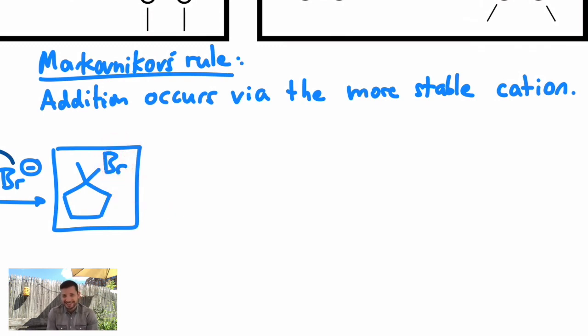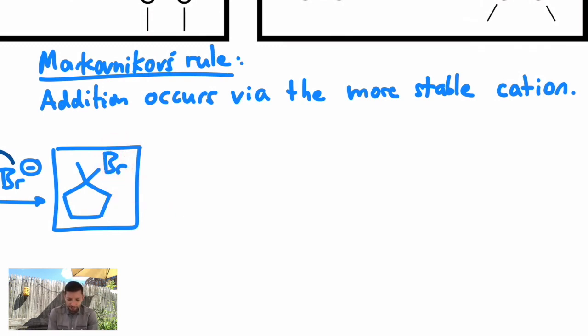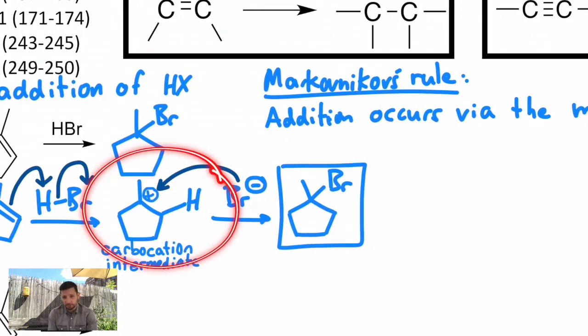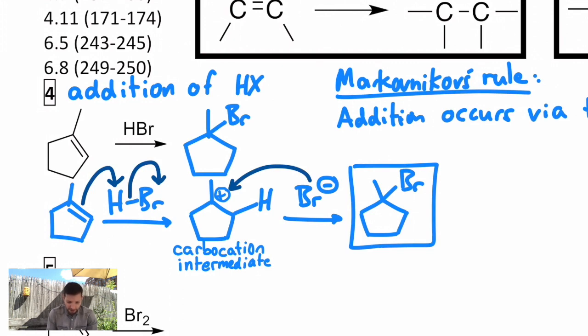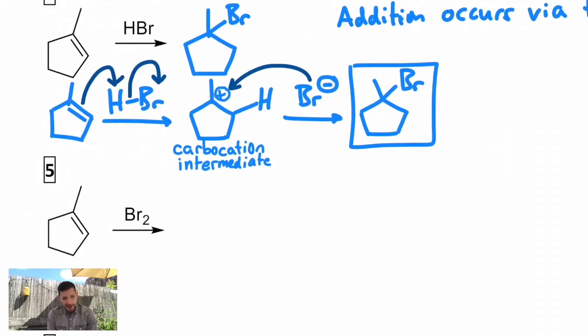It's very hard to trap and see intermediates. We indirectly figure out what the intermediate is by looking at the product of many different types of reactions. What we're learning in this class are very well-established mechanisms, and we feel very confident in what we draw. We get the tertiary cation in this case.